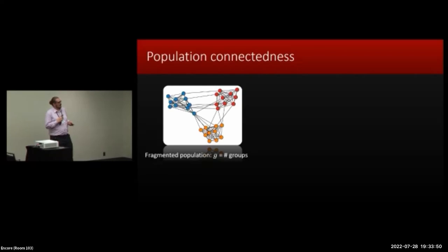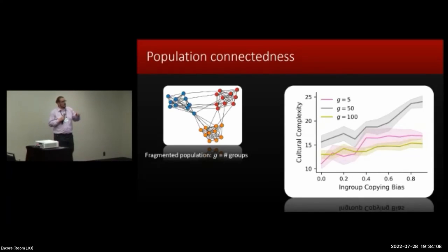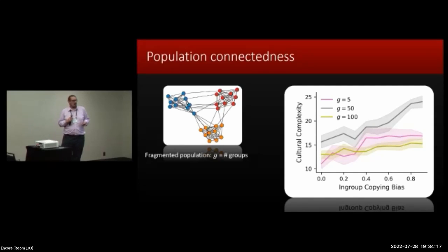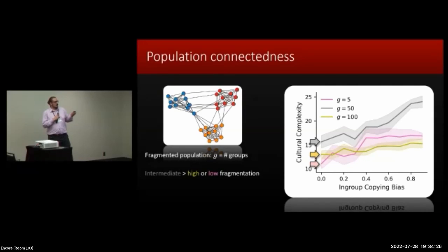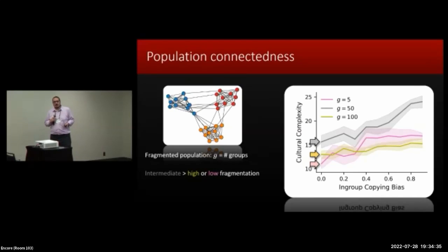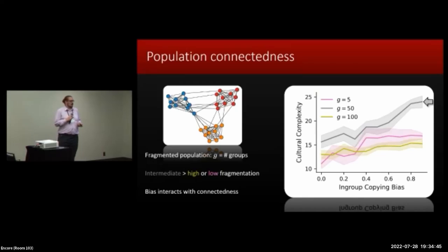Finally, I want to show what happens when you actually fragment the population — introducing social network structure where the probability of in-group connections is higher than the probability of inter-group connections. Here, G — shown in the colors — measures the number of groups, which is a proxy for the level of fragmentation in the population. The x-axis is the strength of the in-group copying bias, and we're looking at cultural complexity at steady state. The first thing to notice is that intermediate levels of population fragmentation tend to produce higher levels of cultural complexity than either low or high levels of fragmentation — reproducing the population structure effects discussed earlier. But notably, on the right side of the graph, the in-group copying bias interacts quite strongly with population fragmentation: the social network structure interacts with the copying bias.